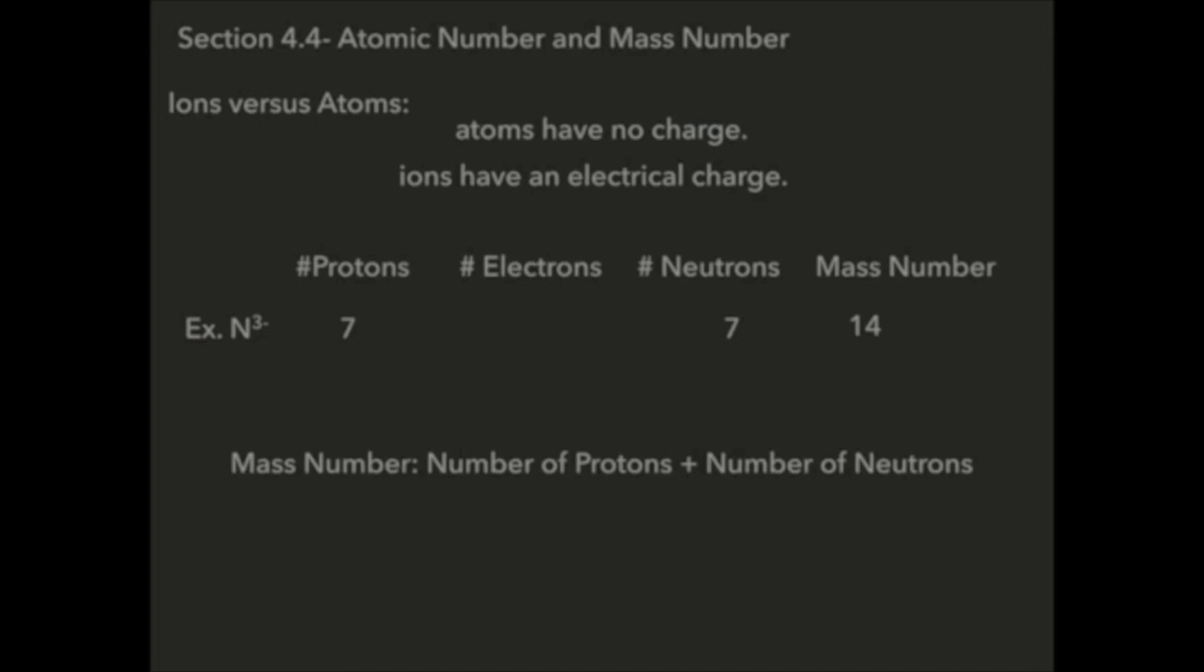Now that I know my number of protons and neutrons I can figure out the electrons. Well my charge, this is an ion because it has a 3 minus charge. Now 3 minus charge tells me I have 3 more electrons than I have protons.